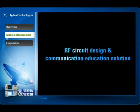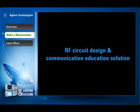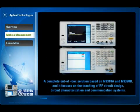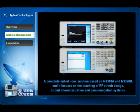To learn more about RF circuit design, circuit characterization, and communication systems, Agilent offers the N9320B TR1 RF training kit option, which can be used with the N9310A and N9320B. This out-of-box training tool includes two boards — one acts as a transmitter circuit and the other one serves as a receiver circuit. The major RF components on each board can be used as separate, stand-alone components.